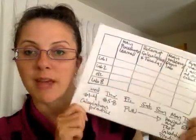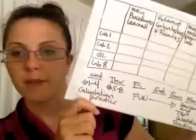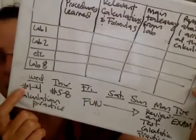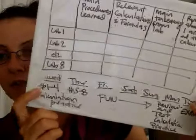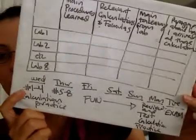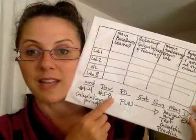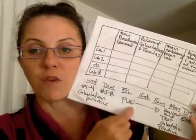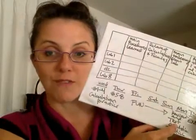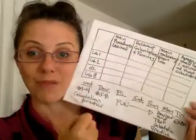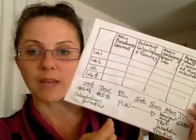Then we broke that down into days. We started with Wednesday — that's actually today, the day I'm making this — and the exam is on Tuesday, so she doesn't have a lot of time. She realized she needs to fill out the chart for labs one through four tonight, and labs five through eight on Thursday. She knows she's going away for the weekend, so she's planning on not doing homework then. On Monday, she'll review the completed chart and fill out a blank version to test herself. All along, she needs to do calculation practice to know how to use the formulas. Then on Tuesday, she'll take the exam.